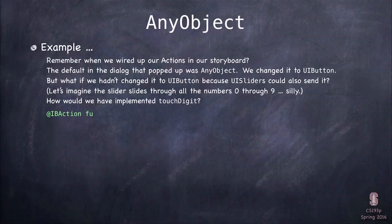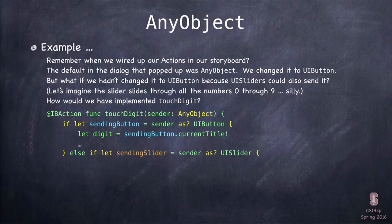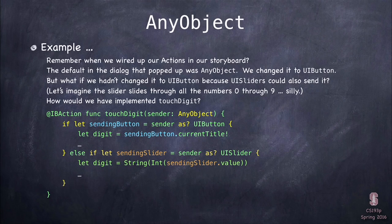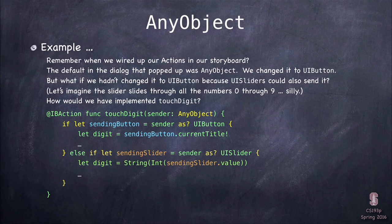What would code look like on touchDigit if we had AnyObject instead? We'd probably say `if let sendingButton = sender as? UIButton`, then we'd treat it as a button, get its currentTitle, and go. Otherwise, `else if let sendingSlider = sender as? UISlider`, then we'd let the digit equal the sendingSlider's value — which is a Double — convert it to an Int, and convert that to a String. That's how we'd get the digit using the if-let-else pattern with optionals.